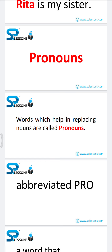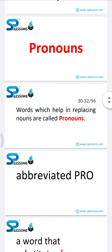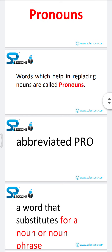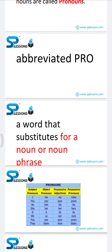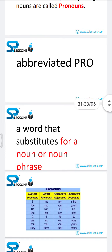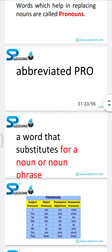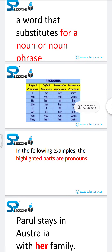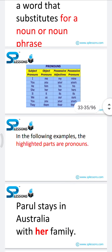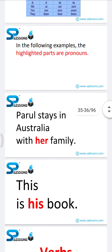Next is pronouns. Words which help in replacing nouns are called pronouns. We use pronouns instead of nouns. A word that substitutes for a noun or noun phrase is called a pronoun. There are several types of pronouns: subject pronouns, object pronouns, possessive adjectives, and possessive pronouns.